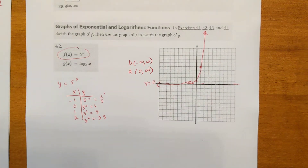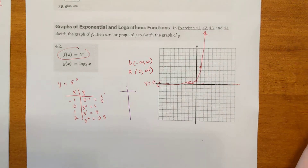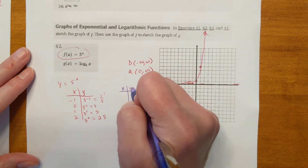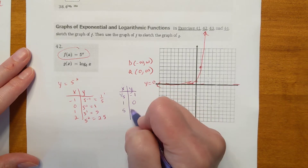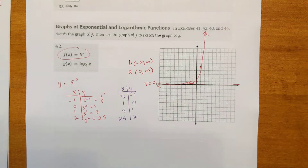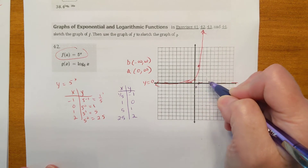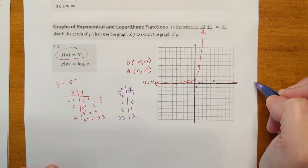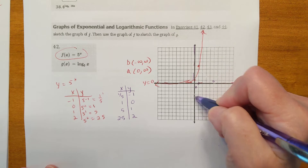The logarithm is the inverse of the exponential function. Recall that for an inverse, we flip the x and the y — wherever there's a y we put an x, and we solve for y. So that's what we do for the logarithm. Instead of (negative 1, 1/5), you flip them to get (1/5, negative 1). Instead of (0, 1), it becomes (1, 0); then (5, 1) and (25, 2). I switched my x's and y's to graph log base 5 of x.